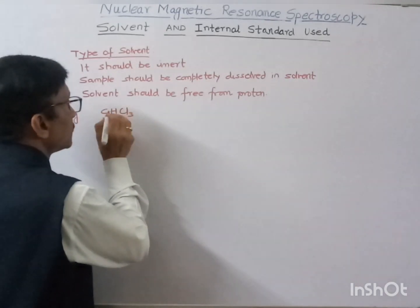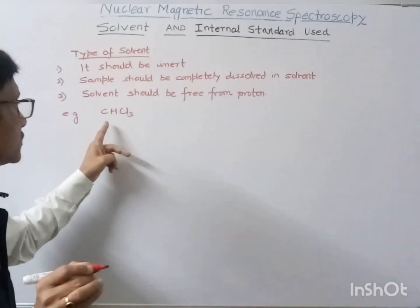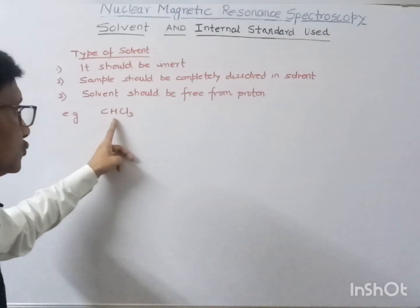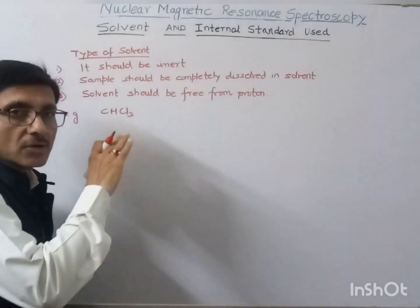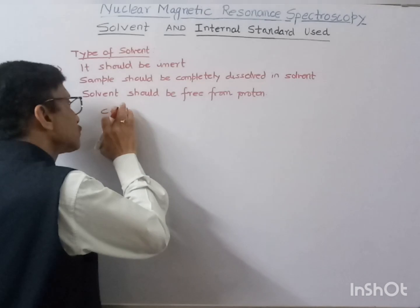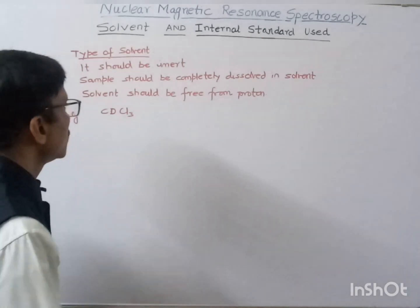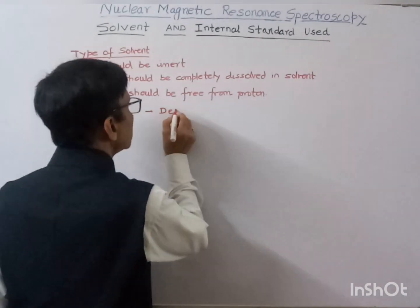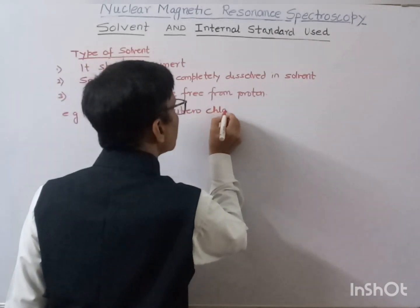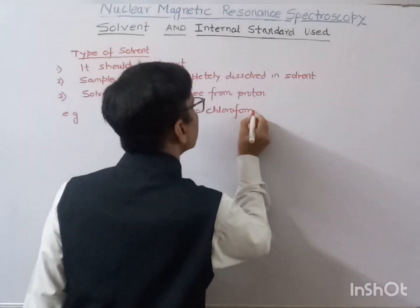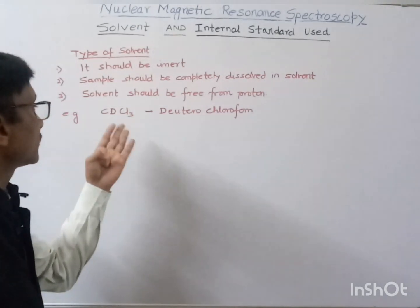For example, if we take chloroform, this solvent cannot be used because it has a proton — it has hydrogen. So it cannot be used to record the NMR spectra. That's why in place of chloroform we use CDCl3, that is deuterochloroform.